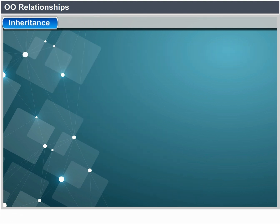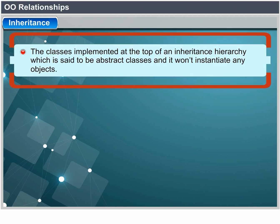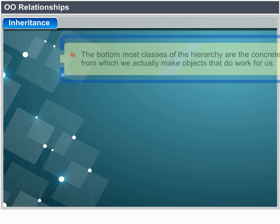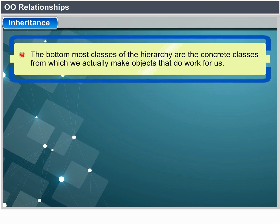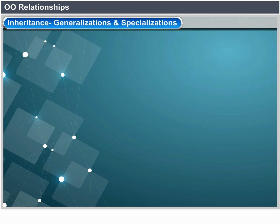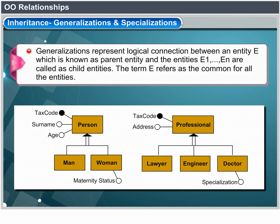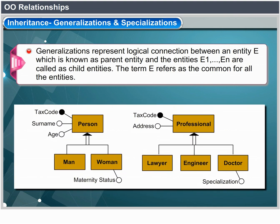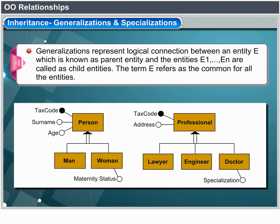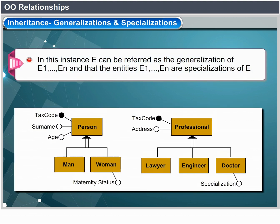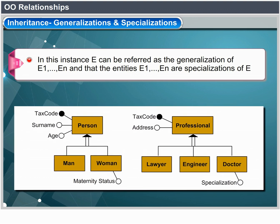Classes toward the top of an inheritance hierarchy tend to be abstract classes that won't have any objects instantiated from them. The bottommost classes are the concrete classes from which we actually make objects that do work. Generalizations represent a logical link between a parent entity and one or more child entities, of which the parent is more general — the children are particular cases.